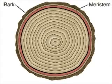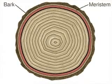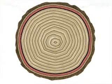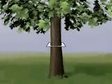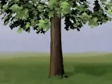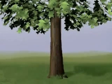Bark replaces epidermis on the exterior of the trunk, as meristem just beneath the epidermis produces cork cells. These are filled with waterproof material and help protect the tree. The role of bark is quite important, since the active xylem and phloem lie close to the vascular cambium near the surface of the tree.